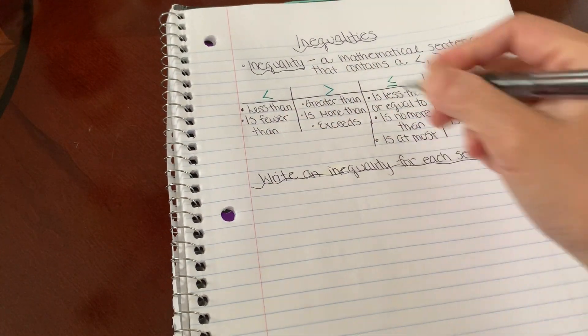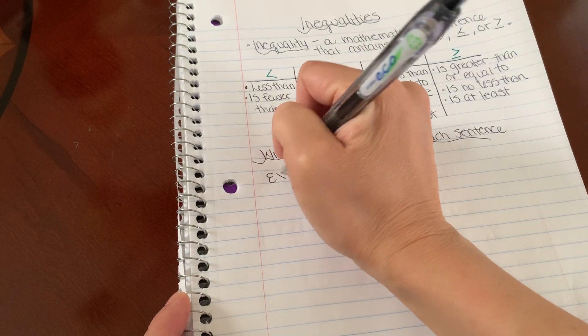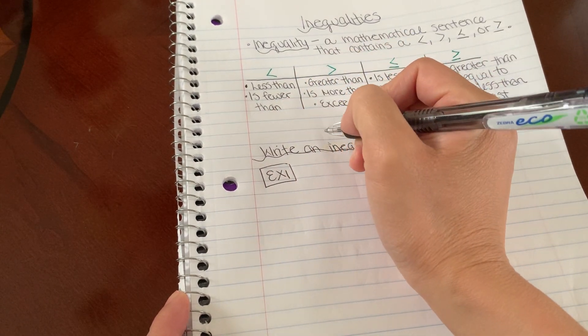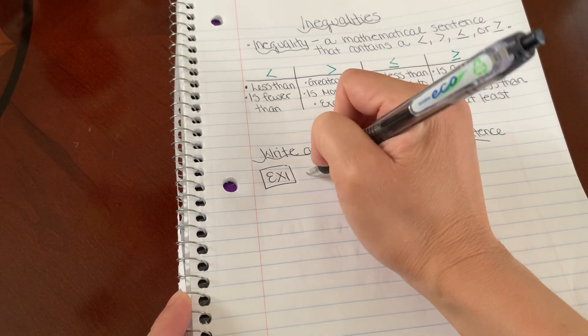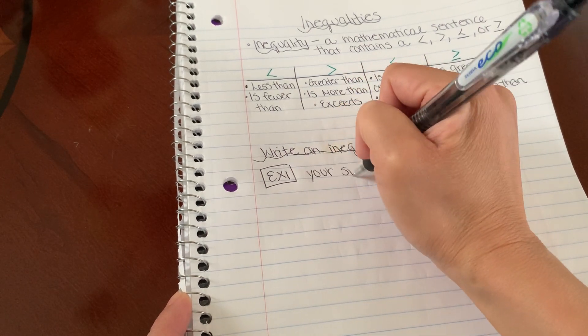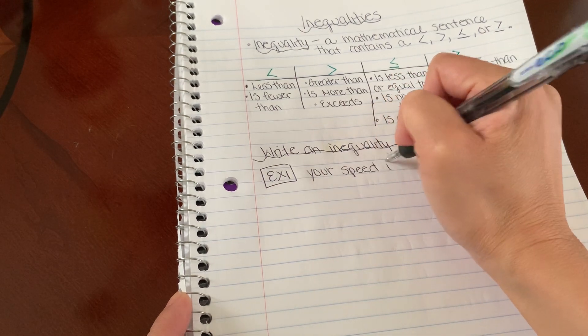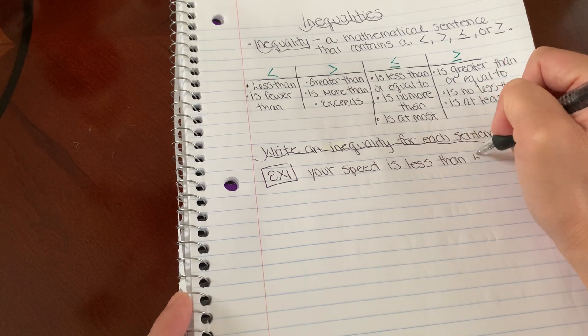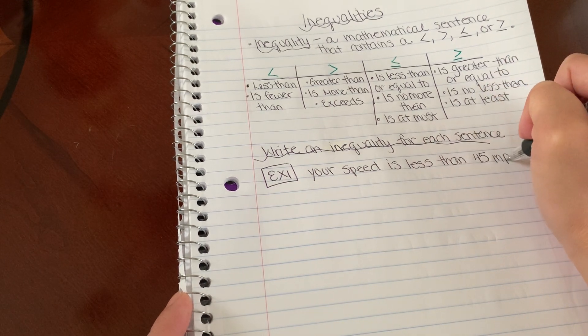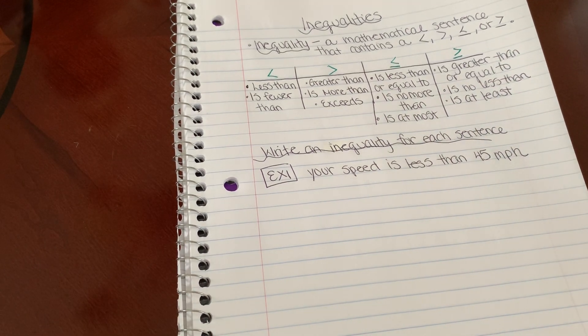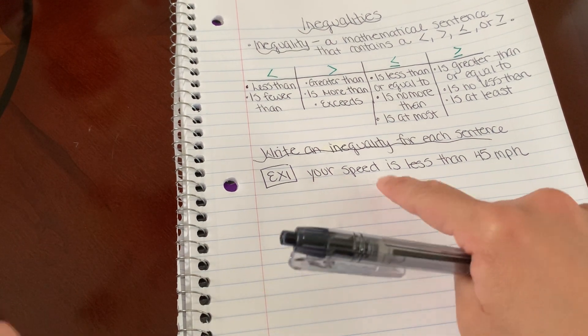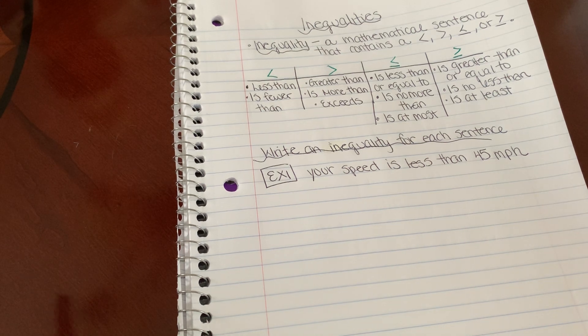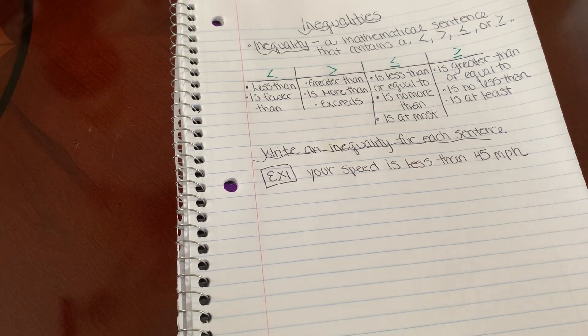So in example one, I want you to write an inequality for your speed is less than 45 miles per hour. So when it gives you something like this, like your speed, how do I designate what my speed is? I don't know exactly what my speed is.